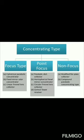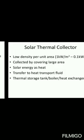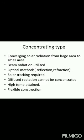The concentrating type collector is subdivided into three parts: line focus type, point focus type, and non-focusing type. The solar thermal collector has high energy density per unit area and collects solar energy over a large area, using heat transfer fluid, a heat transport system, a thermal storage tank, a boiler, and a heat exchanger.